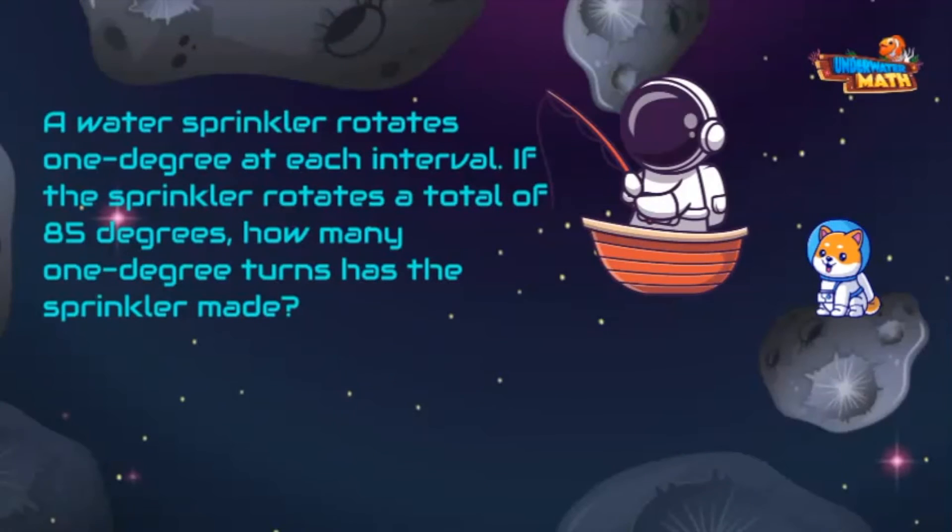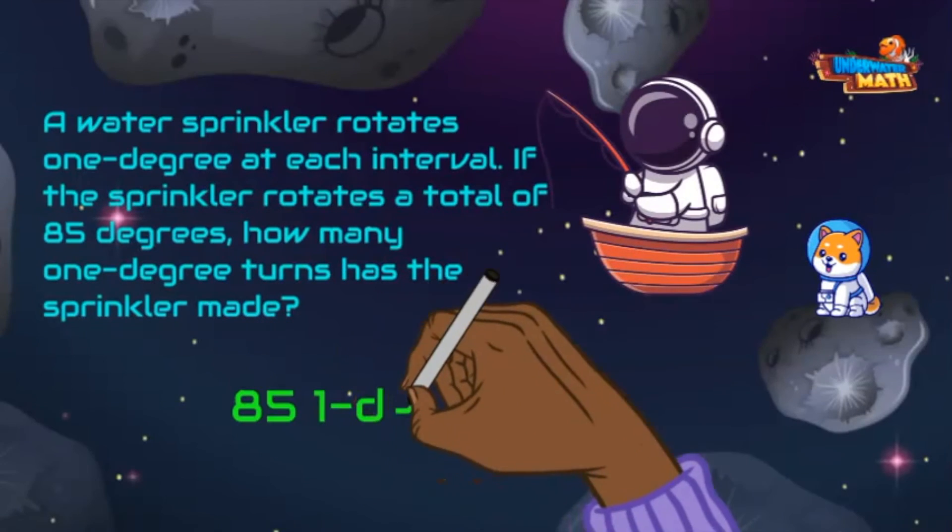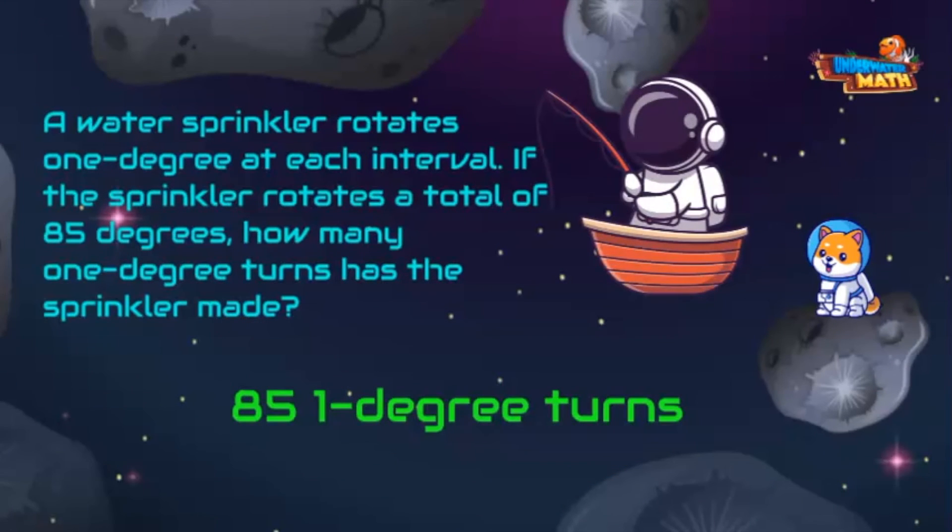Oh, I caught a problem! A water sprinkler rotates one degree at each interval. If the sprinkler rotates a total of 85 degrees, how many one-degree turns has the sprinkler made? Hmm, it's made 85 one-degree turns. Each turn is one degree out of 360.